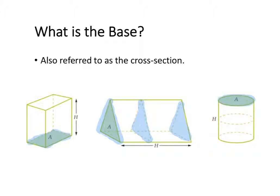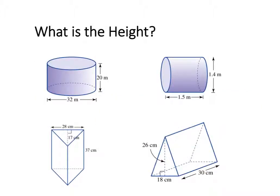For a cylinder, no matter where we cut it along the side, we are always going to get a circular base that is the same. The other key measurement you need when calculating the volume of a prism or cylinder is its height. The height is going to be from the base of the shape to the top of the shape. So once you have identified the base, you will then be able to identify the height.